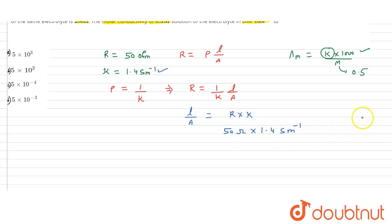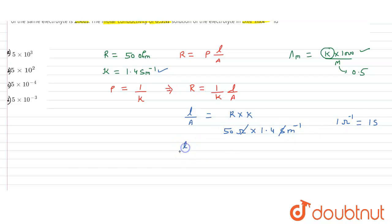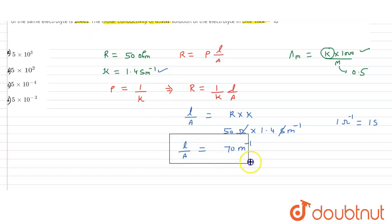Since ohm and siemen (S) are inverse units, they cancel out. The cell constant l/a comes out to be 70 m⁻¹. The cell constant is the same for all concentrations of the same electrolyte in the same cell.